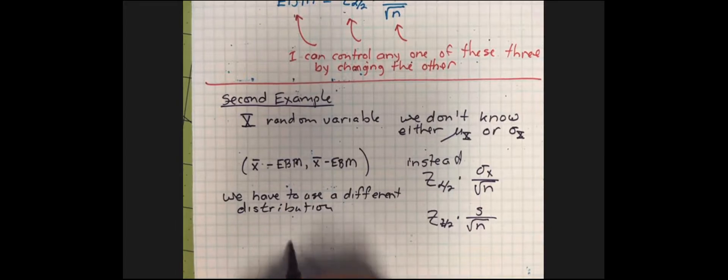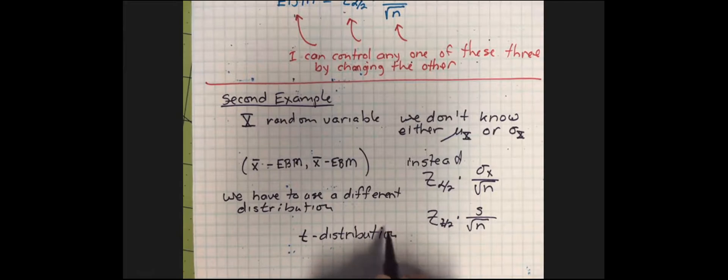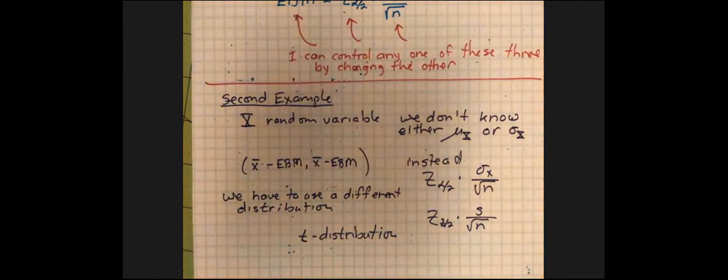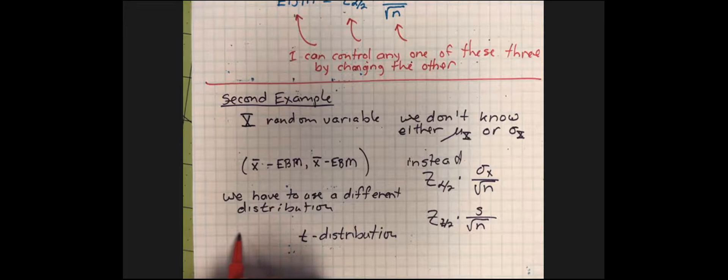We have to use a different distribution called the t-distribution, which is built into your calculator. On your distribution menu the first three functions are for the normal distribution; the next three are for the t-distribution — inverse t, t probability density function, and t cumulative density function. This distribution has a funny-sounding name from the old days: it's called Student's t-distribution.